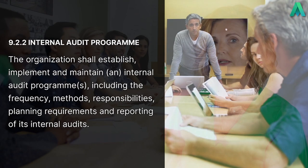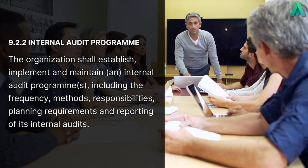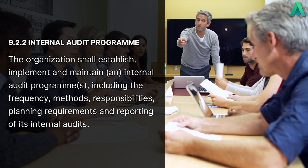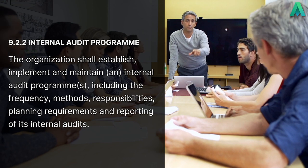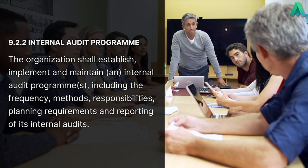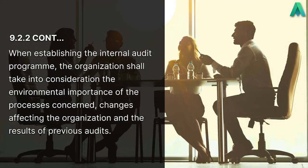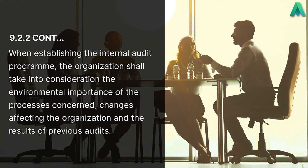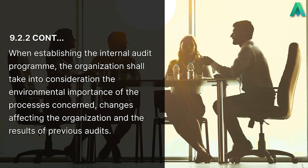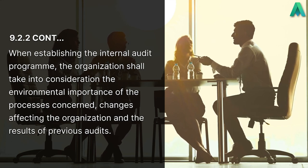We then move on to the second sub-clause of 9.2.2 internal audit program, where it states that the organisation shall establish, implement, and maintain an internal audit program, including the frequency, methods, responsibilities, planning requirements, and reporting of its internal audits. When establishing the internal audit program, the organisation shall take into consideration the environmental importance of the processes concerned, changes affecting the organisation, and the results of previous audits.